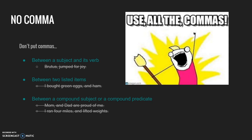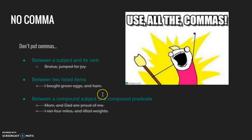There are a few times when you should not use commas. Don't put a comma between a subject and its verb — there's no reason to pause in a simple sentence like Brutus jumped for joy. Don't put a comma between two listed items; green eggs and ham doesn't need one. And don't put commas between compound subjects, compound predicates, or compound objects — any kind of two-part list probably doesn't need a comma.